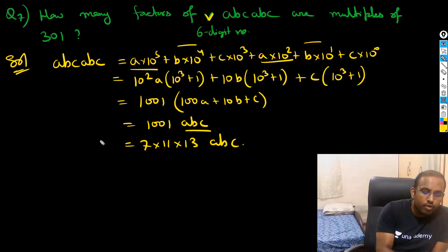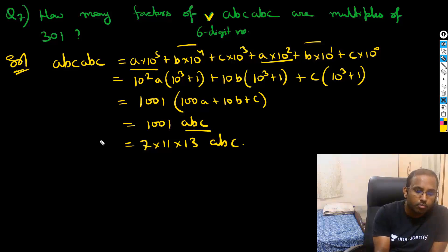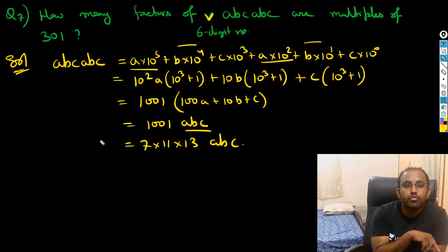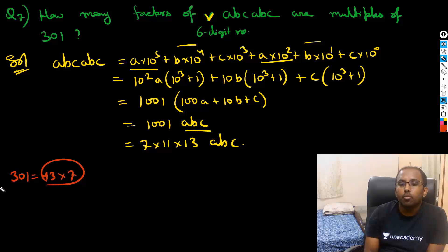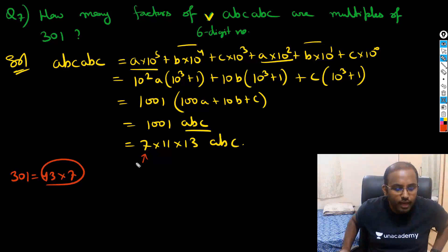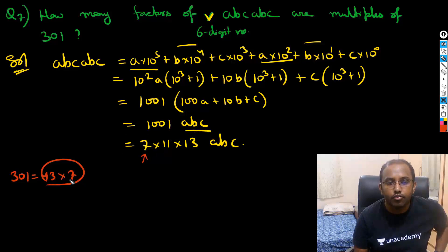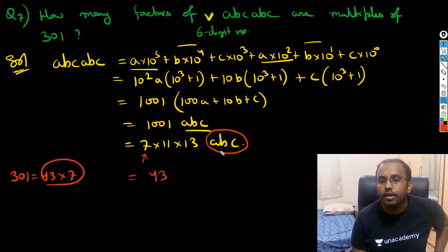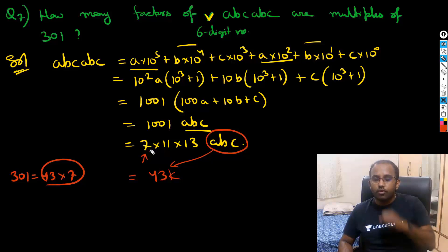So abcabc = 1001 × abc, and 1001 = 7 × 11 × 13 × abc. Now, 301 = 43 × 7. If I'm looking for a multiple of 301, I can take the factor 7 from 1001, which means abc must be a multiple of 43 to give us 43 × 7 = 301.